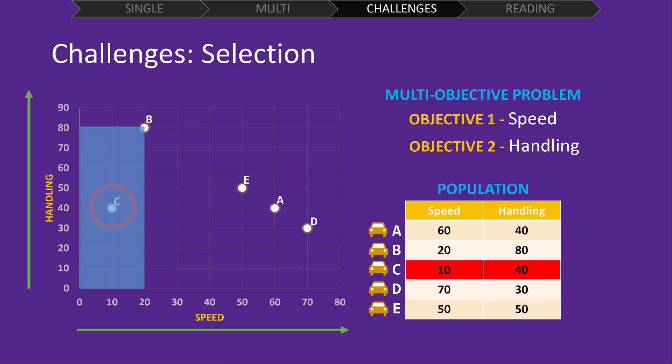Here, I have shaded in all of the objective space which is worse than solution B. This is referred to as the objective space which is dominated by solution B. And we can see that solution C is dominated by solution B. Already at this point, we can choose to get rid of solution C. It doesn't offer anything which solution B doesn't do better. But let's continue.